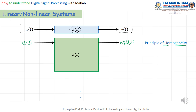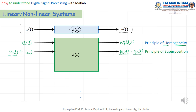For another input: x1(t) produces y1(t), and x2(t) produces y2(t). If the combination x1(t) + x2(t) produces y1(t) + y2(t), we call this the principle of superposition. A system that satisfies both homogeneity and superposition is called a linear system.